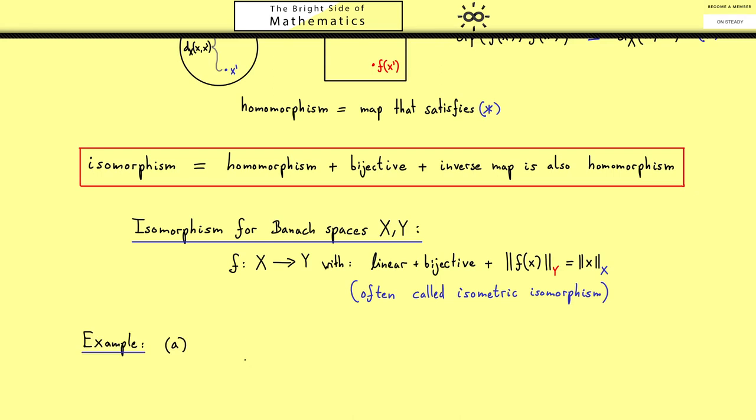The first example should be an operator defined on the ℓᵖ space. I denote the operator with S index r because it's a shift operator that shifts everything to the right. More concretely, it takes a sequence x₁, x₂ and so on and maps it to a sequence that starts with 0, and then just the rest of the numbers follow.